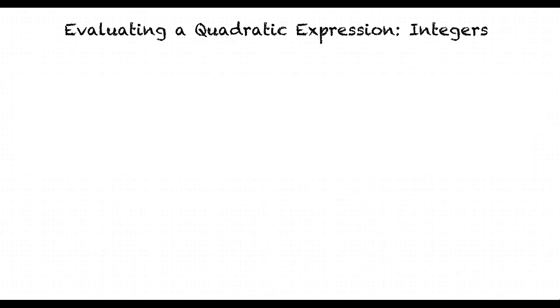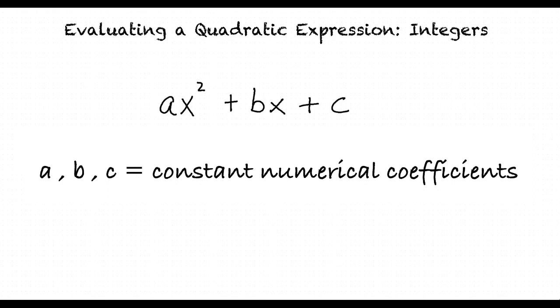I'm not sure I understand. What exactly is a quadratic expression? A quadratic expression is a polynomial that has a degree of 2. This looks like ax squared plus bx plus c, where a, b, and c represent constant numerical coefficients in front of the variables.